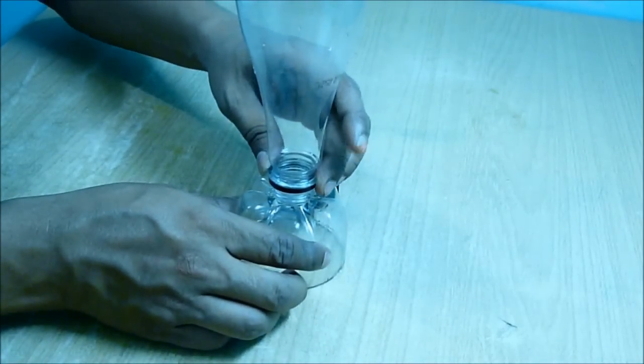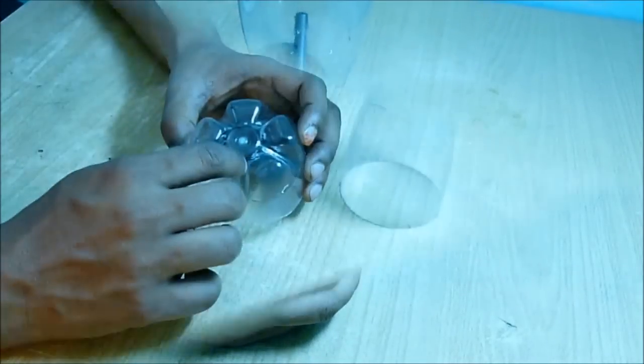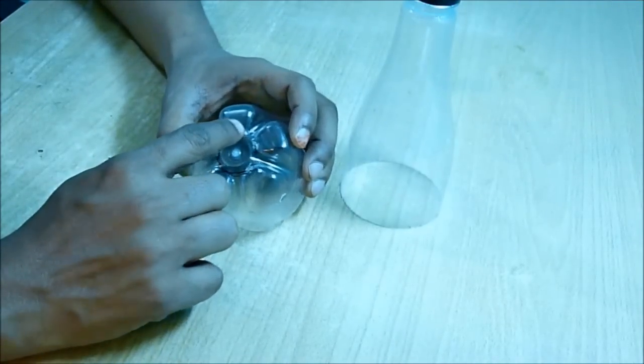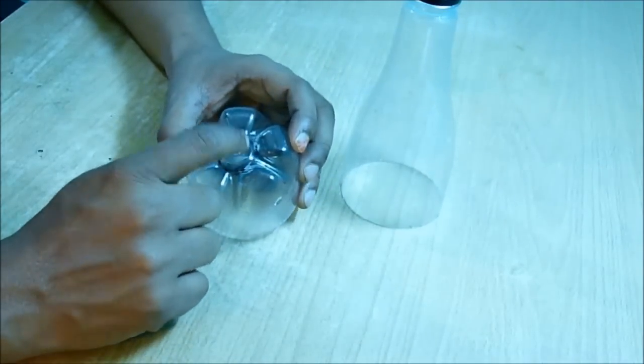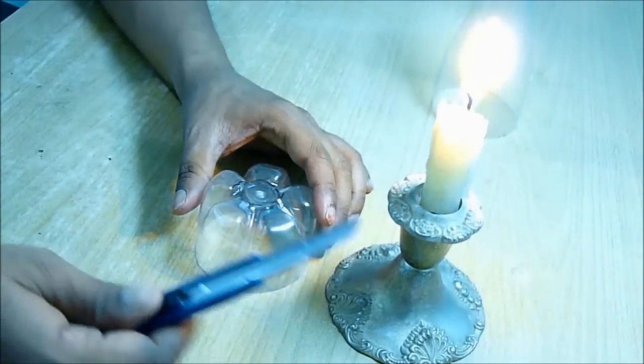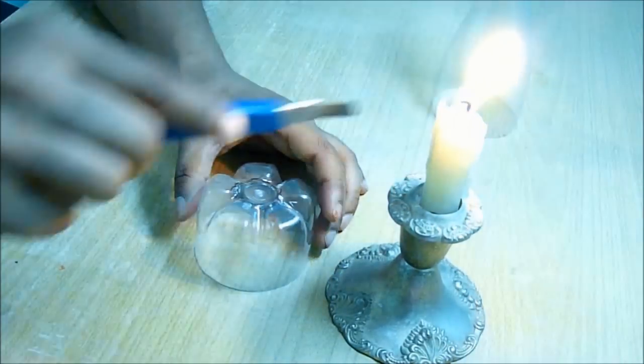Then we have to place the top part on the base, so you have to make a hole on the base. Mark the diameter on the base. The base is a little hard, so you have to cut it in a different way.